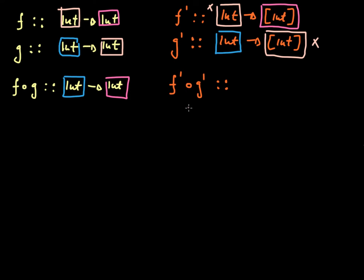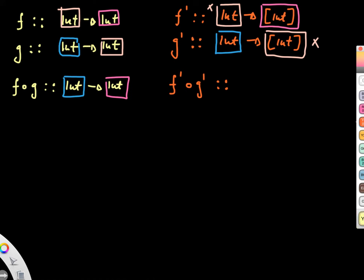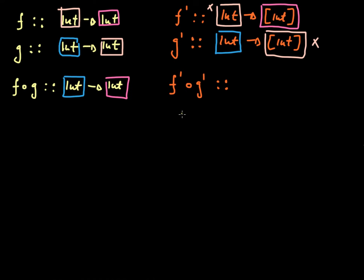So what should I do so that this actually succeeds? Well, just using things from my last video when we were looking at the maybe monad and monads in general, the output of g prime is a list of integers. Whatever that list of integers is, it's going to get fed into this function there. So we need to somehow upgrade f prime.